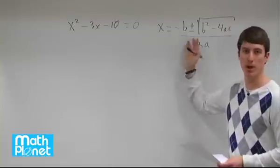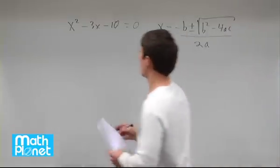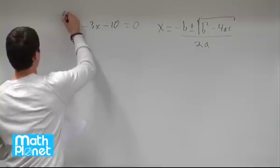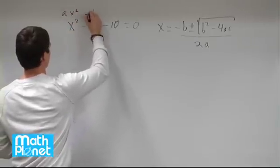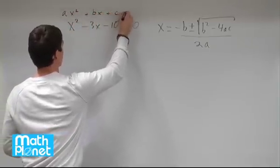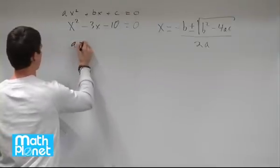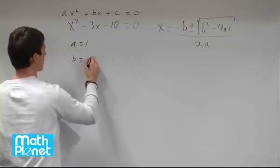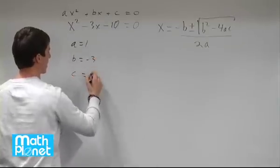We're just going to plug in our numbers here and see what we get. We have ax squared plus bx plus c equals zero. So a is equal to 1, b is equal to negative 3, and c is equal to negative 10.